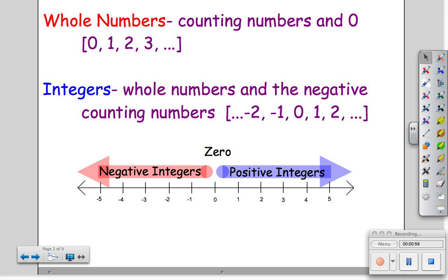Usually when we draw a number line, we label a number line with the integers. If zero is in the center, it doesn't have to be, but when zero is in the center, your negative integers are to the left and your positive integers are to the right.